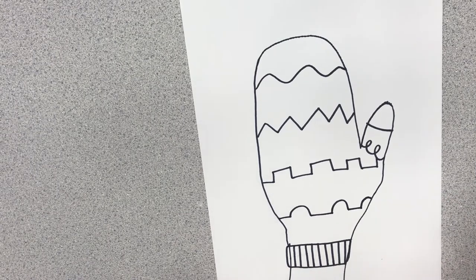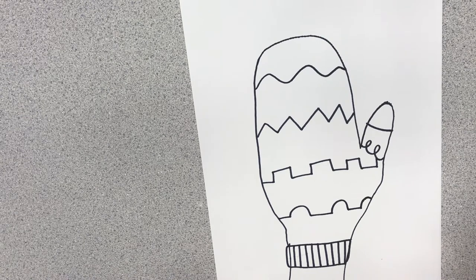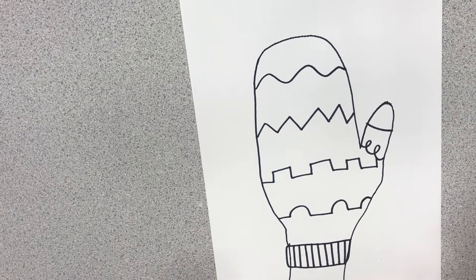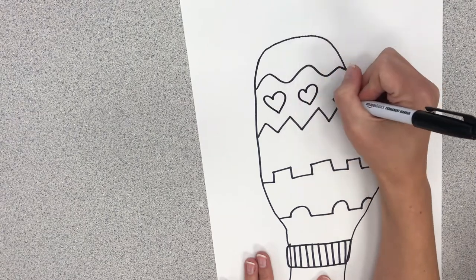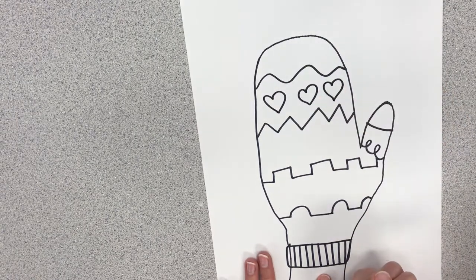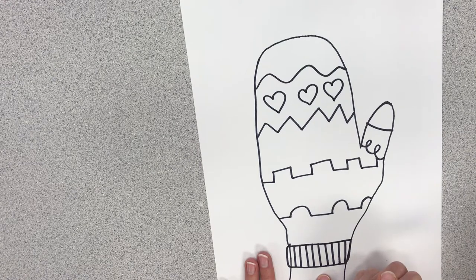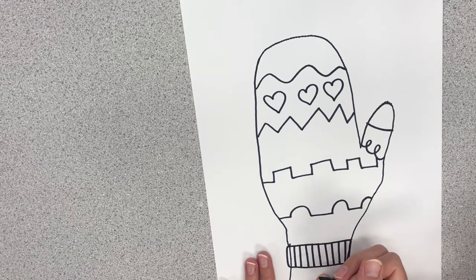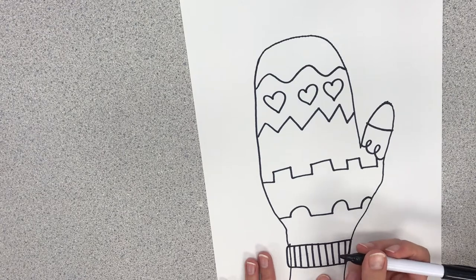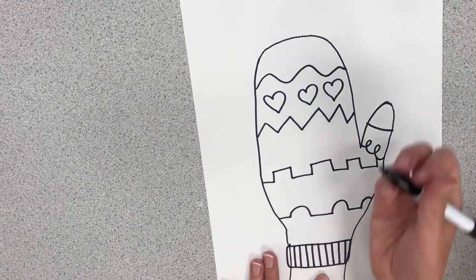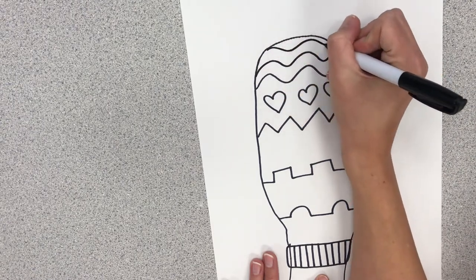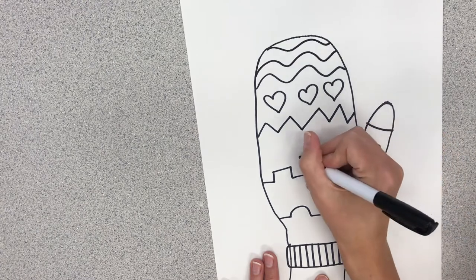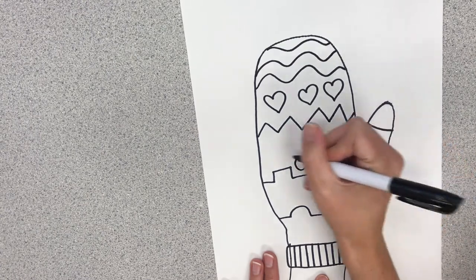Now kindergarten this would be a good place for you to stop if you wanted to and then you could color in your design. But those of you who are maybe first and second grade you guys could go ahead and add different shapes in here if you wanted to. You could draw a picture of a snowman on your mitten if you wanted to. You could have Santa on here, a gingerbread cookie. There's a lot of different things you could put in here and I'm gonna add just some extra little details to make it a little more interesting for me to color.